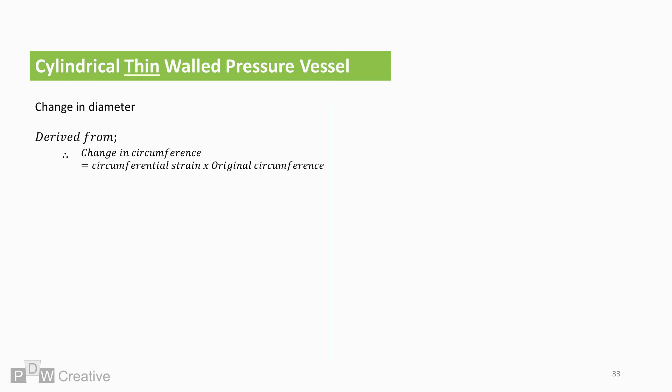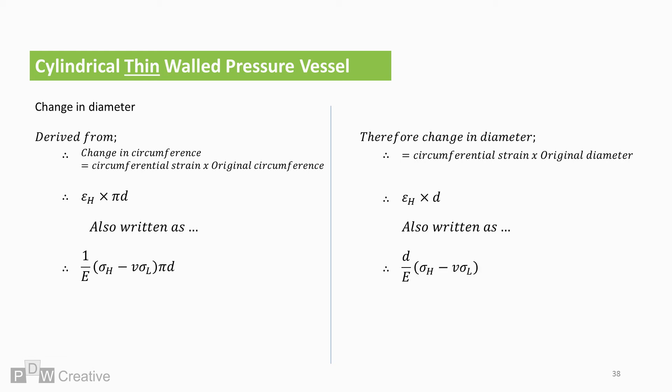The last variable to work out is the change in diameter. We're going to derive the change in diameter from the change in circumference. So hoop stress times pi D can be rewritten as shown. Now let's go for the change in diameter. So hoop stress times D can be rewritten as D over E times hoop stress minus V times axial stress, or PD squared over 4TE times 2 minus V.